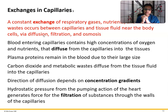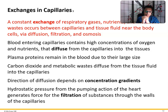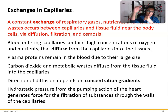A constant exchange of respiratory gases, nutrients, and metabolic waste occurs between capillaries and tissue fluid near the body cells via diffusion, filtration, and osmosis. Blood entering capillaries contains high concentrations of oxygen and nutrients that diffuse from capillaries into tissues. Diffusion is a movement from high concentration to low concentration. Plasma proteins remain in the blood due to their large size.